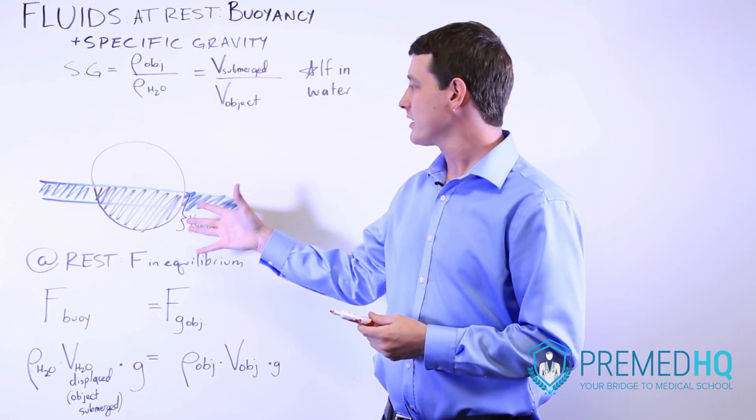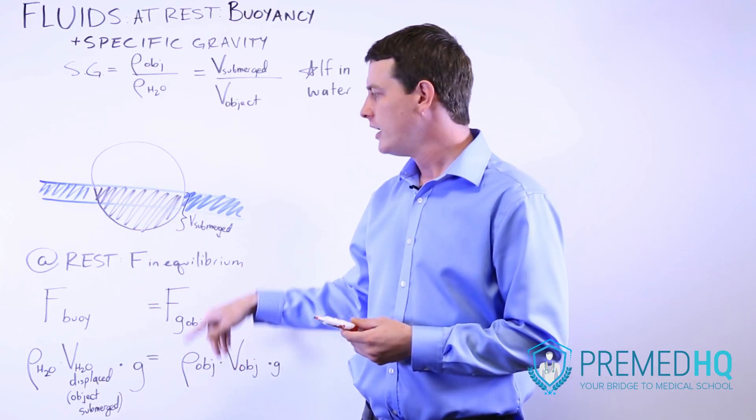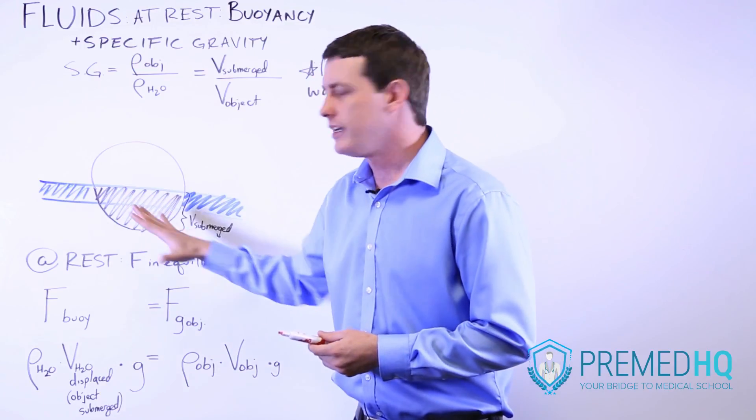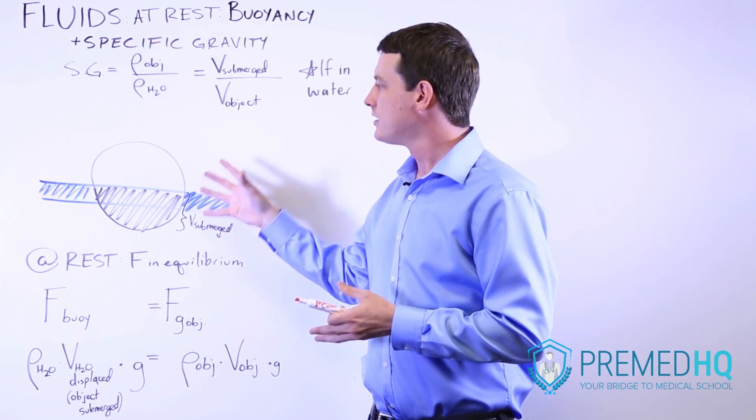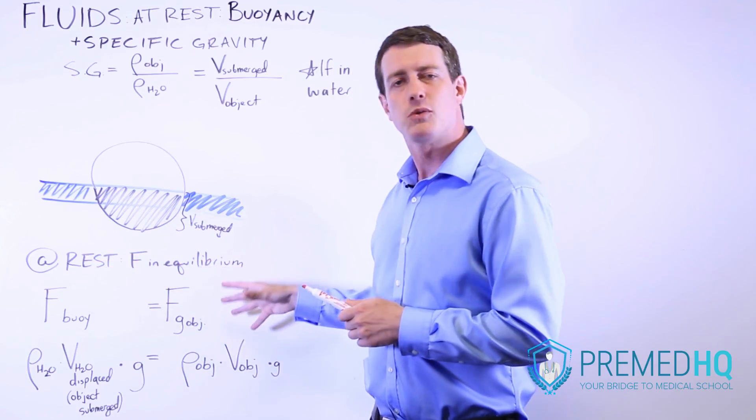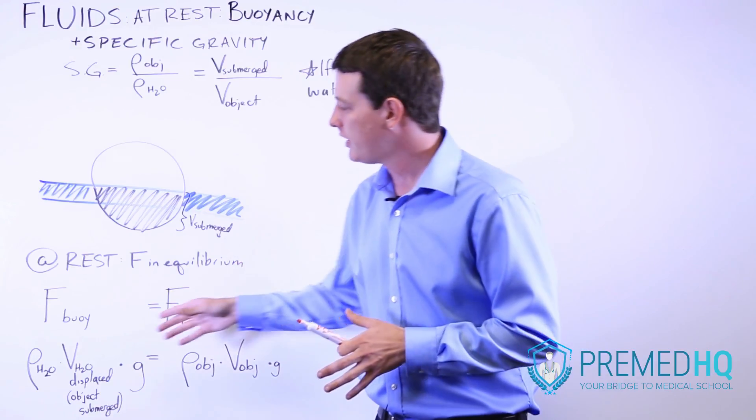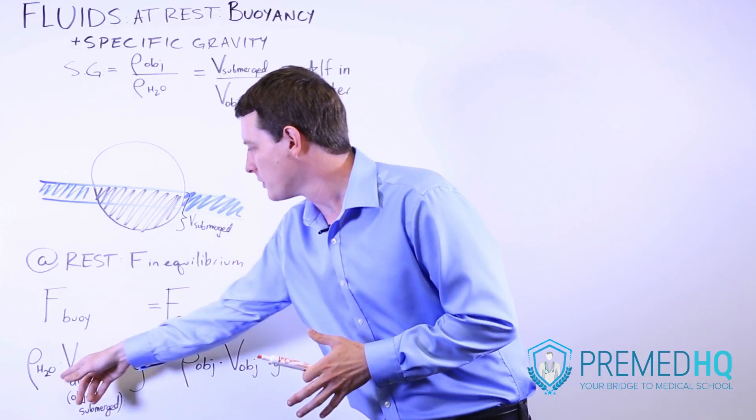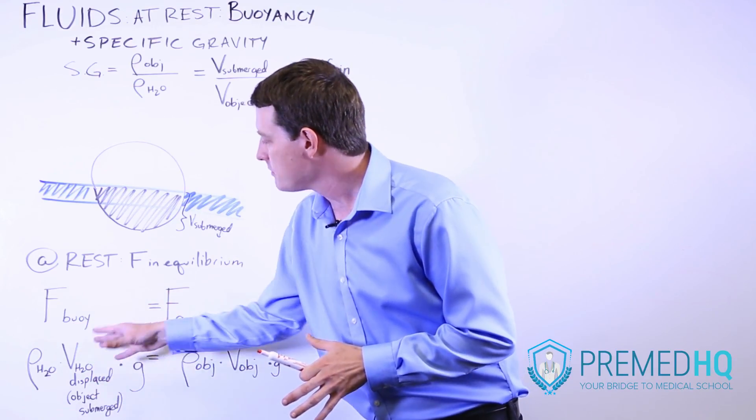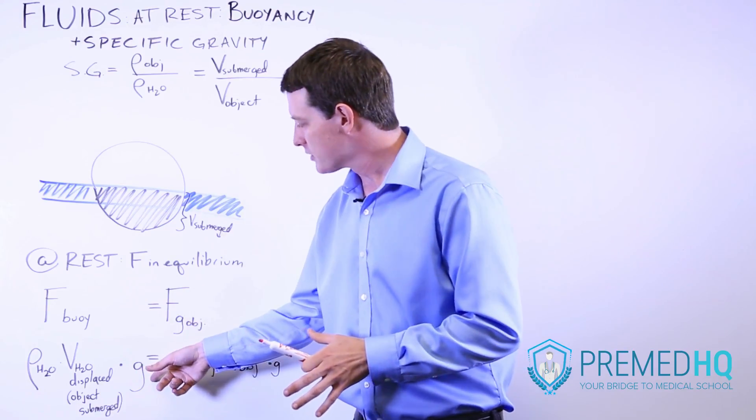And so a floating object at rest has two forces on it. It has the gravitational force pushing down and the buoyant force from all this displaced water that is serving to help support this object. When you set the buoyant force equal to the gravitational force of the object, essentially what you're doing here is you're using the buoyant force formula: the density of water or whatever fluid, times the volume of that water or fluid displaced, times gravity.